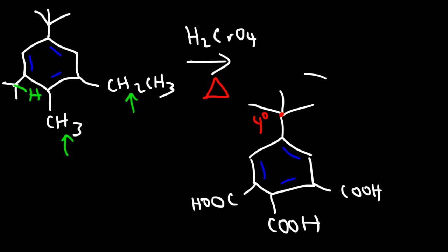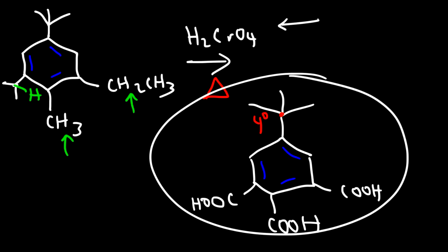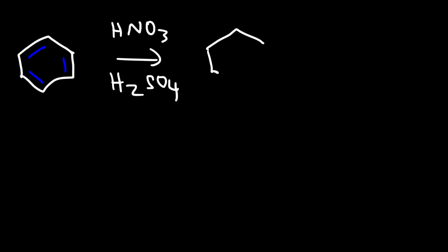So this is going to be the product if we use a strong oxidizing agent like chromic acid or potassium permanganate with H3O+. Now there's some other things that we could do as well. So once we have a benzene ring, we can react it with nitric acid and sulfuric acid. And this will give us an NO2 group on the ring, and so what we have is nitrobenzene.